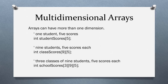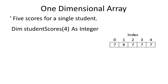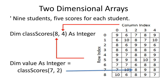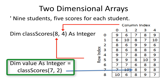Arrays can have up to 32 dimensions, however I have never seen more than three dimensions used in a program. So far we have only covered single dimensional arrays — here is one with five elements holding five quiz scores for a single student. Here is an example of a two-dimensional array with nine rows of five columns each. The Dim statement declares it as Dim classScores(8, 4). The first number identifies the row and the second identifies the column. The assignment Dim value As Integer = classScores(7, 2) retrieves the value from row 7, column 2. Here is a three-dimensional array with three classes of nine students each, with five quiz scores per student, declared as Dim classScores(2, 8, 4) As Integer, initialized to all zeros.